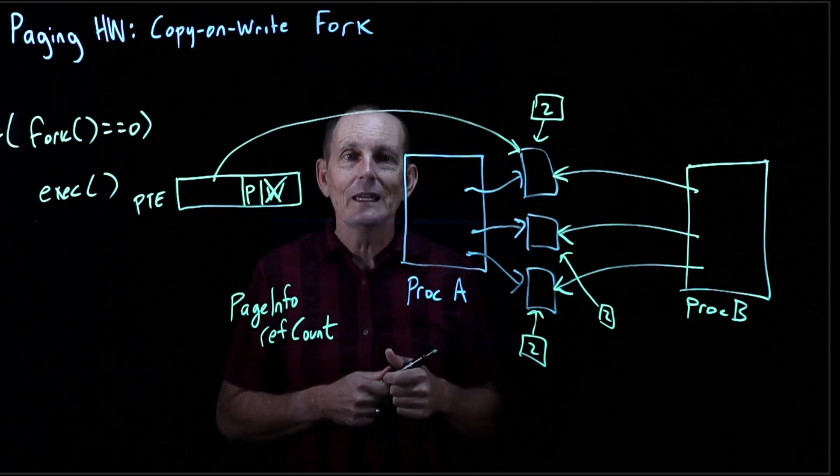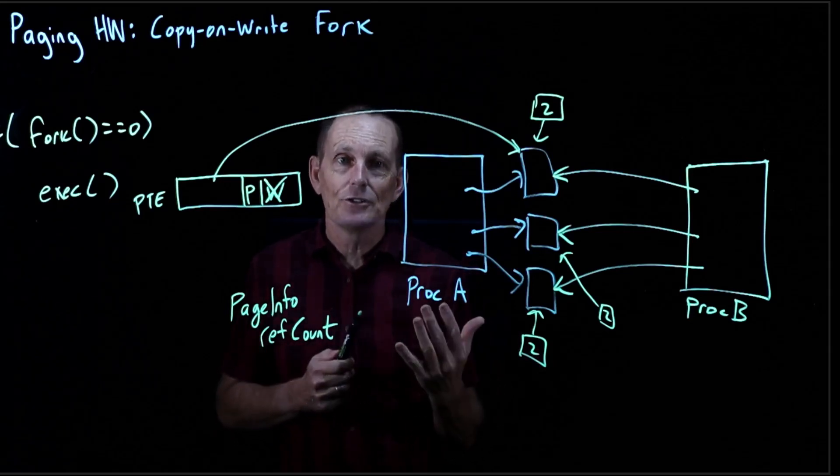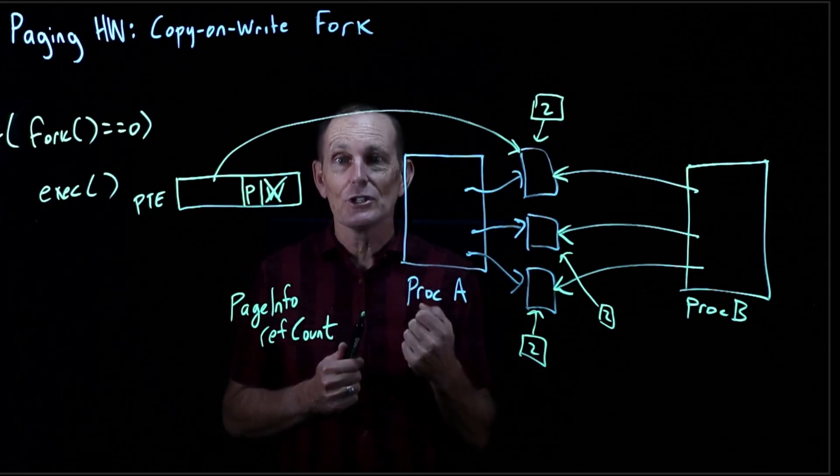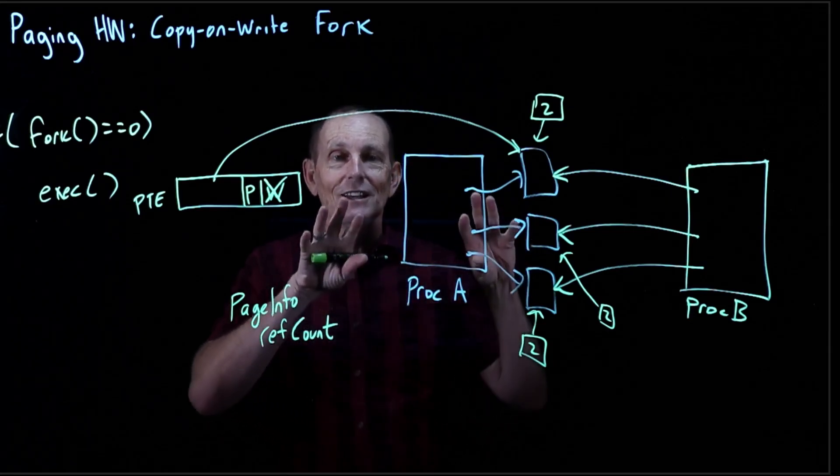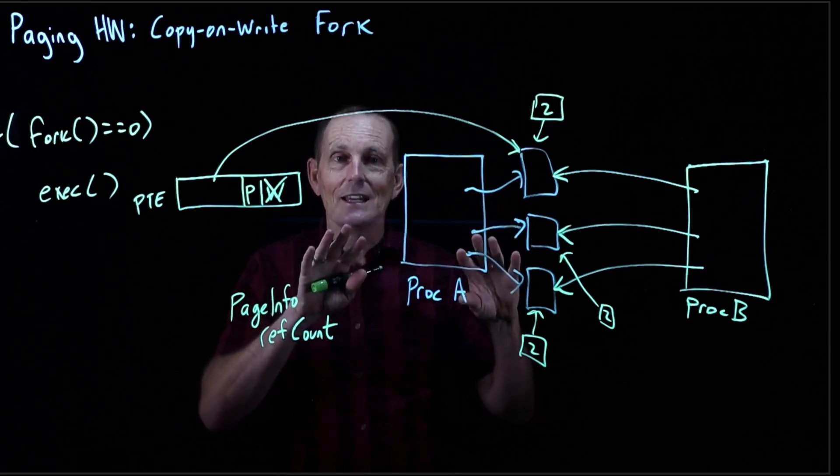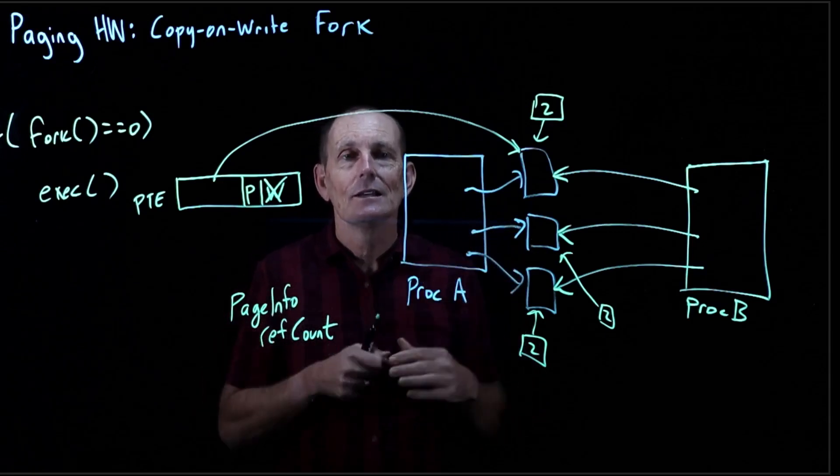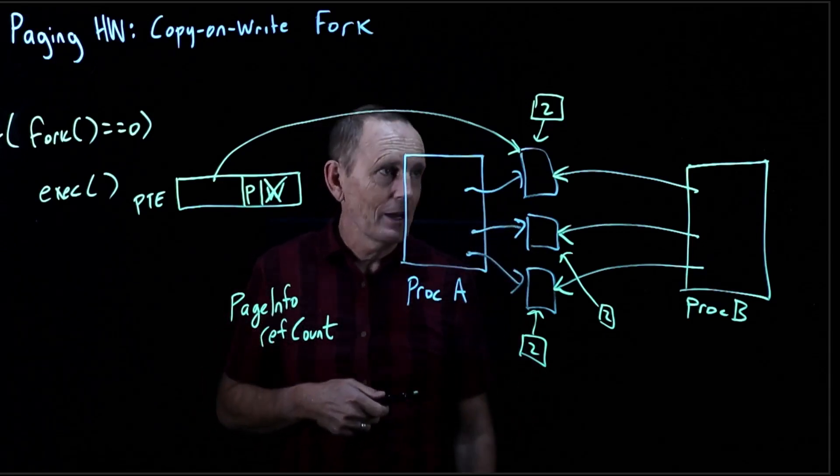The original fork said copy everything. The copy-on-write says wait to copy until you're forced to. And you're forced to because you need two different pages with different values. And that is the last minute you can wait. That's till a write happens. So let's look at what happens.